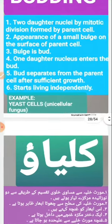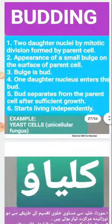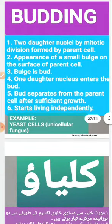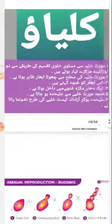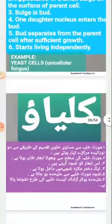Next is budding, also called ghunchakari or kaliyon. In yeast, two daughter nuclei are formed by mitotic division. A small bulge appears on the surface of the parent cell — this bulge is the bud. The nucleus divides, one daughter nucleus enters the bud, cytoplasm divides, and the bud grows. As the bud grows sufficiently, it detaches from the parental cell and starts living independently, forming a chain of buds. Many cells can be produced from one yeast cell by this process.